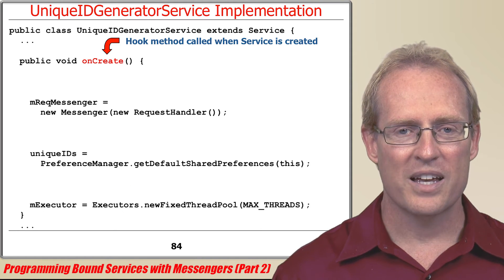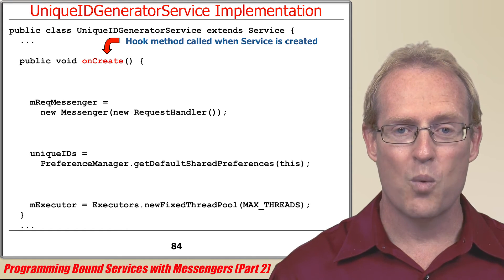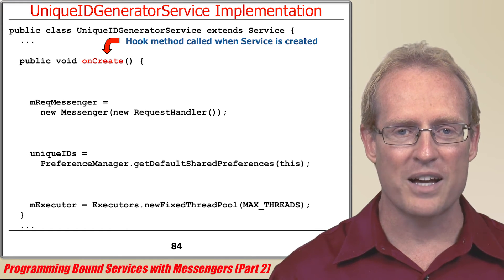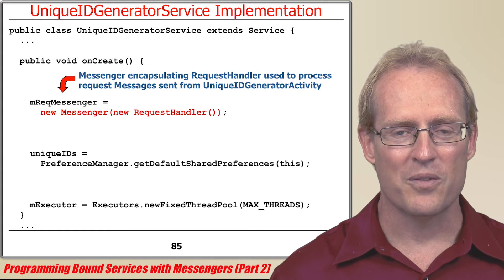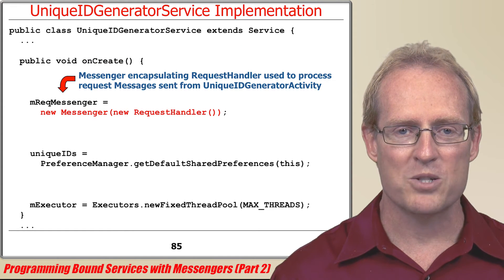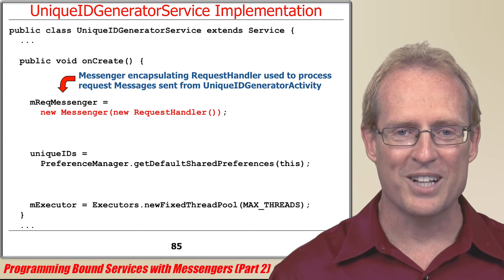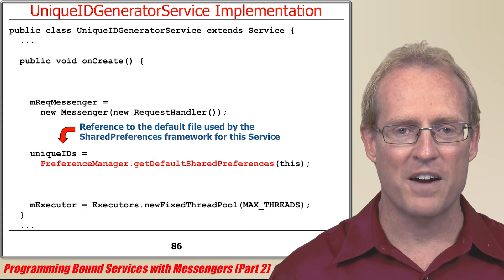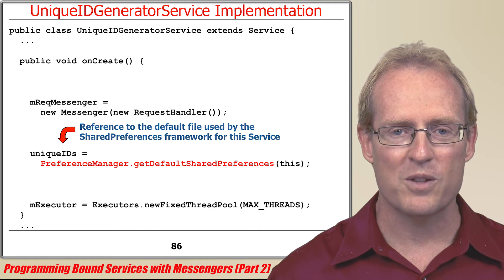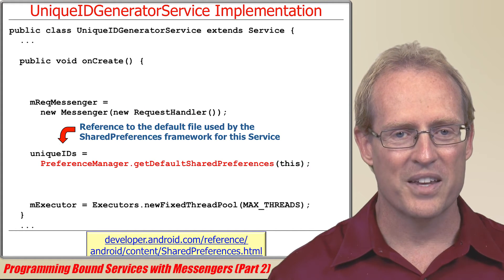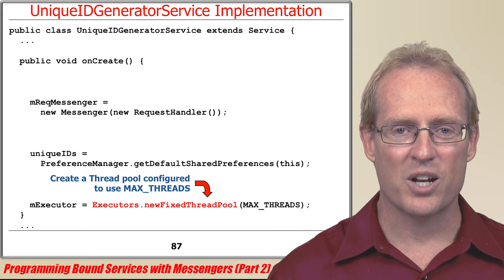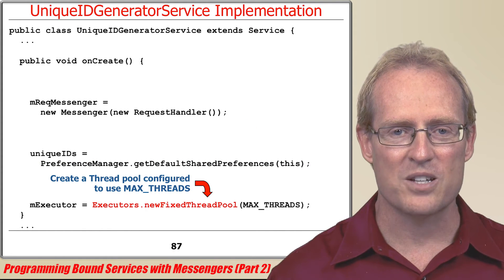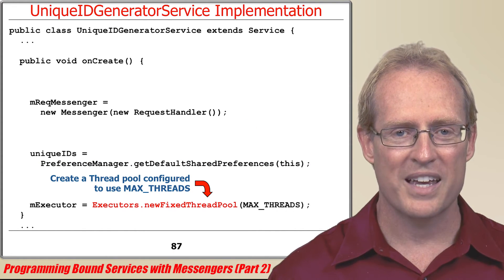When this service is launched, the Android service framework dispatches its onCreate hook method, which initializes the data members outlined above. For example, it first creates a request messenger that encapsulates a request handler used to process request messages received from clients. It then obtains a reference to the default file used by the shared preferences framework for this service. Finally, it initializes a fixed thread pool executor that's configured to use max threads.